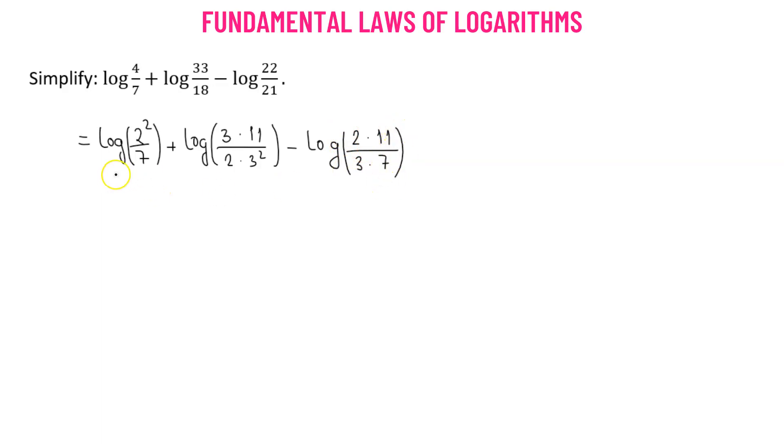Now we will combine the first and second terms using the property that log a plus log b equals log of a times b. So we have log of 2 squared times 3 times 11, divided by 7 times 2 times 3 squared,